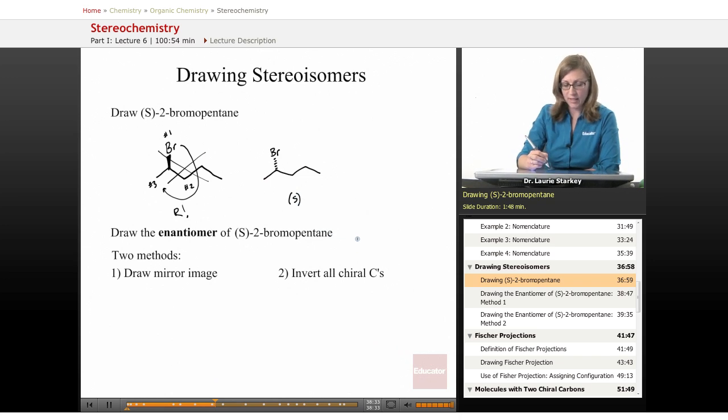But this, in fact, would be the S configuration. So a lot of times it's a lot faster to pick one of the stereoisomers and then confirm it rather than try and guess in your mind what's going to be the appropriate one. So that would be S-2-bromopentane.